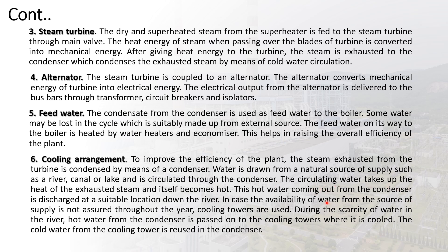The circulating water takes up the heat of the exhausted steam and itself becomes hot. If the circulated water is hot, it is returned to the river. In case the water supply from the source is not assured throughout the year, cooling towers are used. During scarcity of water in the river, hot water from the condenser is passed to the cooling towers where it is cooled.